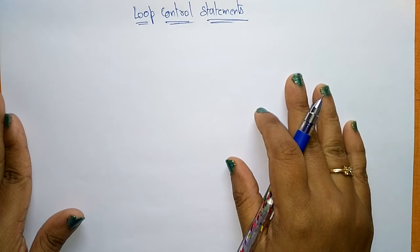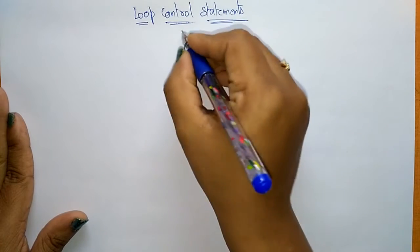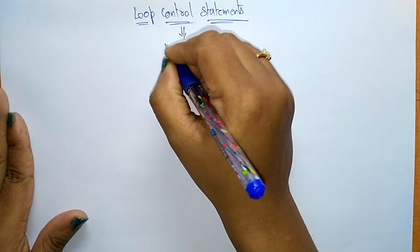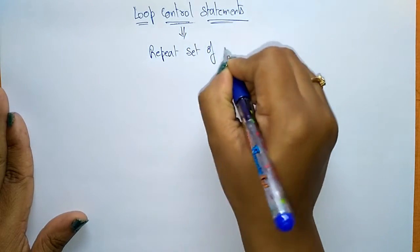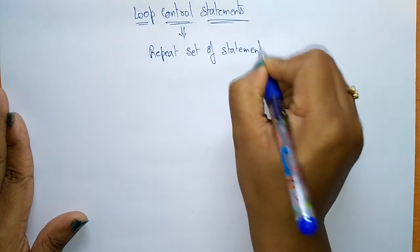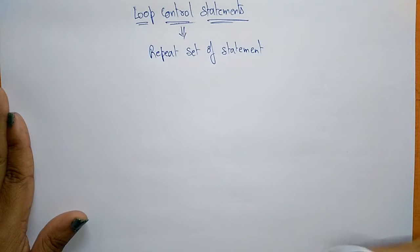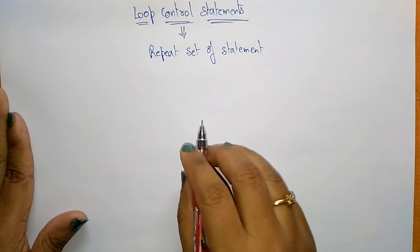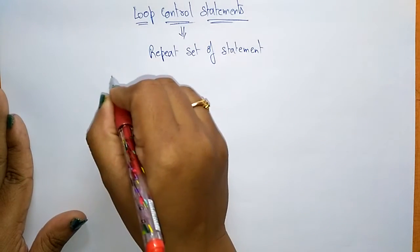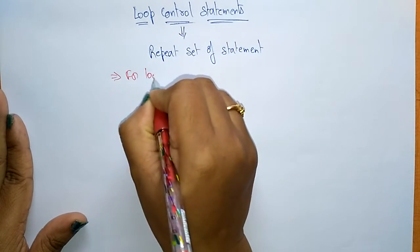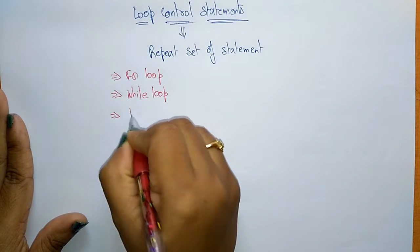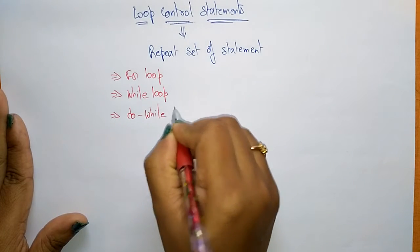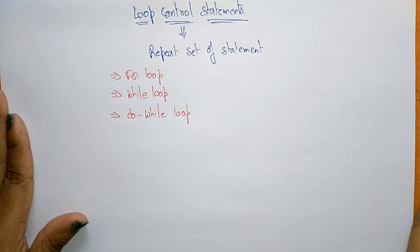There are different loop control statements present in C programming. The main use of loop control statements is to repeat a set of statements until the condition is satisfied. There are three different loop control statements: the first one is the for loop, next the while loop, and another is the do-while loop.